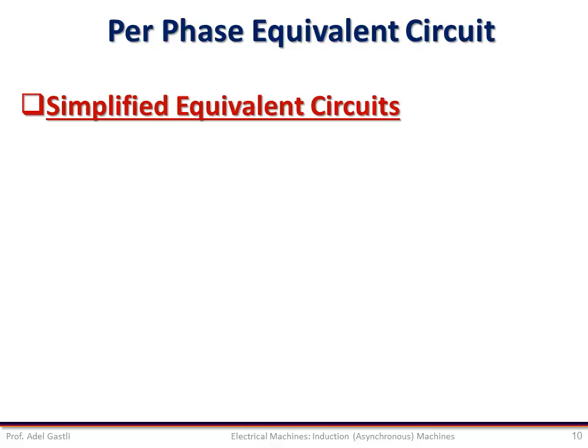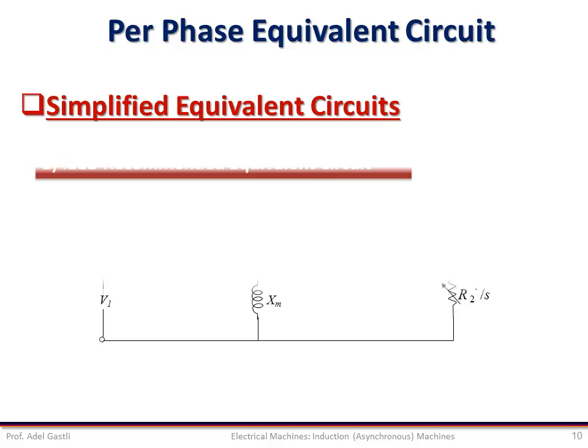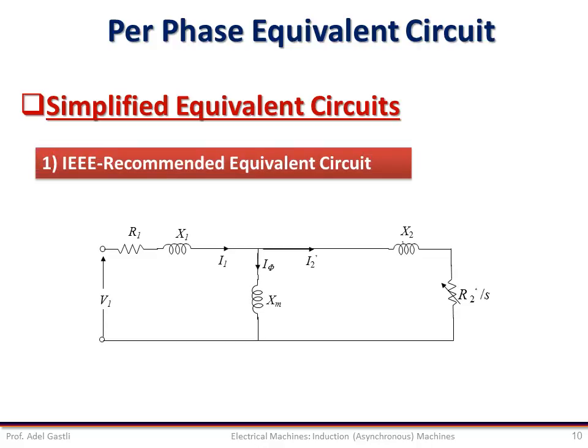Similarly to the transformer, we can also simplify the equivalent circuit of the induction motor by making a few assumptions. For instance, this is the IEEE recommended equivalent circuit, where the core loss resistance is removed, but core copper loss is still considered in the calculation of efficiency.